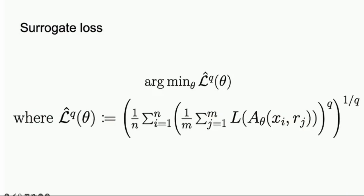We care about this adversarial loss, but in practice we work with a different loss. If you stare at this loss, when q equals one, you're back to empirical risk minimization - all inputs are treated equally. This is an L_q norm. If q tends to infinity, you get an infinity norm, so you're just selecting the worst-case input.